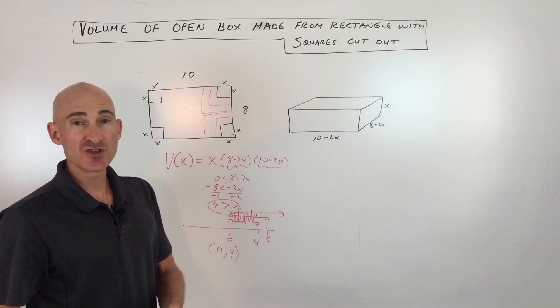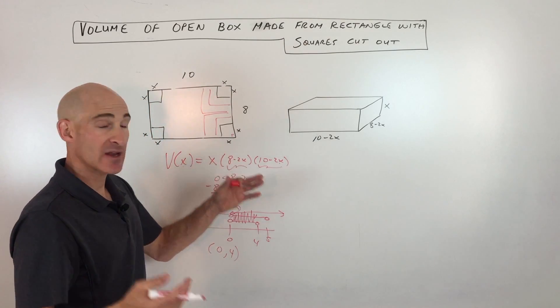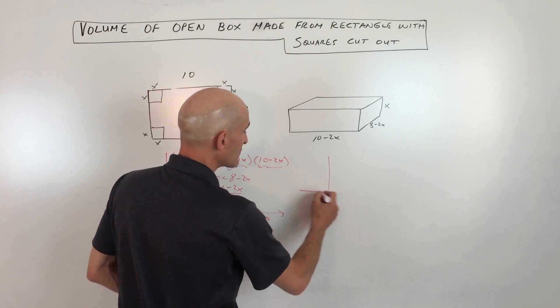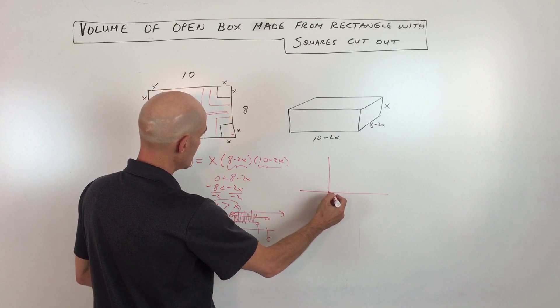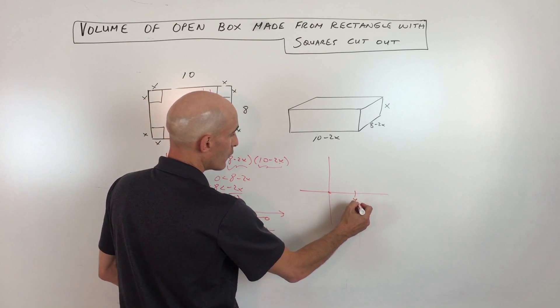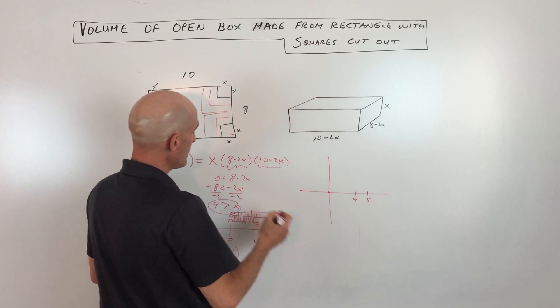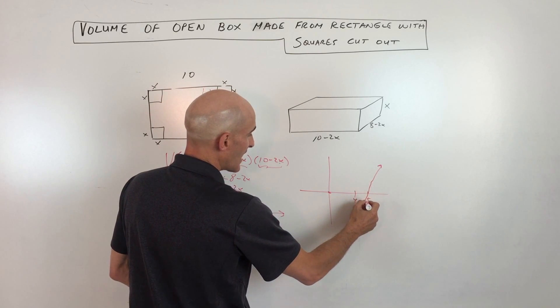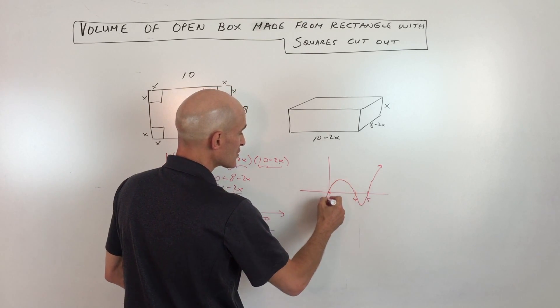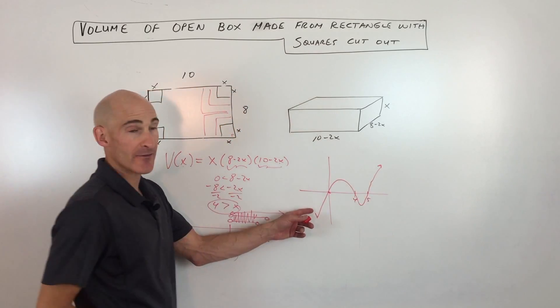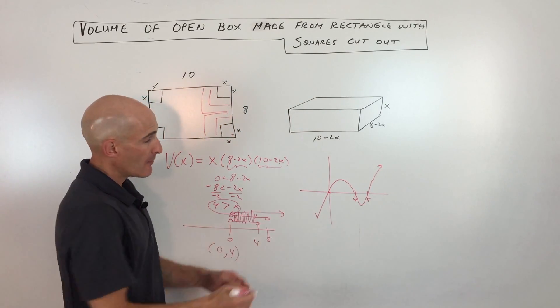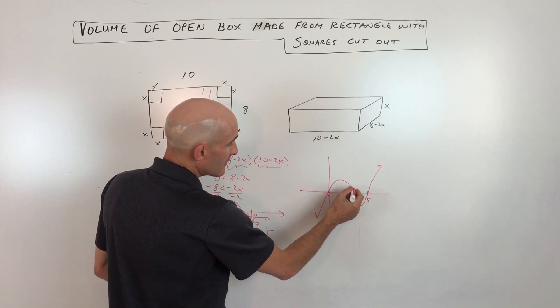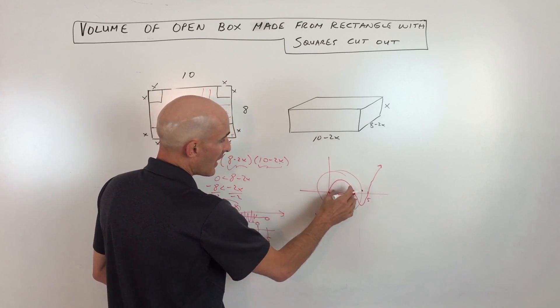So the next thing that we can do is, depending on what class you're in, you can either graph this, and if you graph it, it's going to look something like this. It's going to cross here at 0, it's going to cross here at 4, it's going to cross here at 5. The leading coefficient is positive, it's going to be going up to the right. It's an odd degree, so it's going to be going the opposite direction to the left, so down here like this. But since we're only looking at this restricted domain from 0 to 4, this is the part of the graph we're going to zero in on right here.